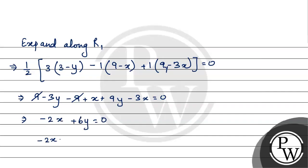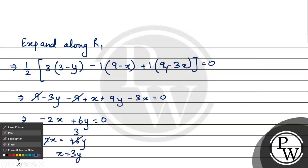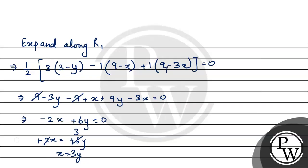So, minus 2x equals minus 6y. Signs become positive. And 2 goes into 6 three times. So, x equals 3y. The final answer is x equals 3y. I hope you understood it well. Best of luck.